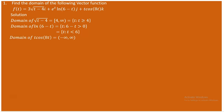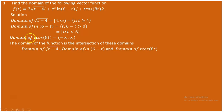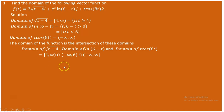The domain of the third component t·cos(8t) is the set of all real numbers. We now have three domains. The vector function is defined at values where all scalar component functions are defined, so we take the intersection of these three domains.